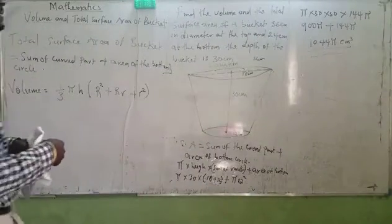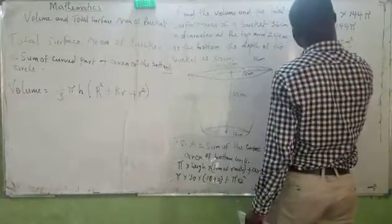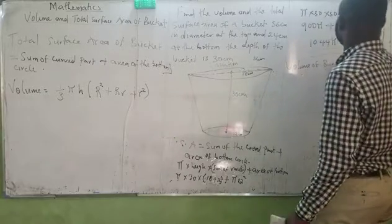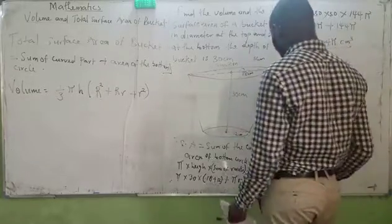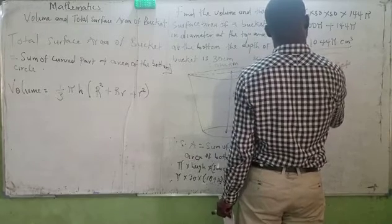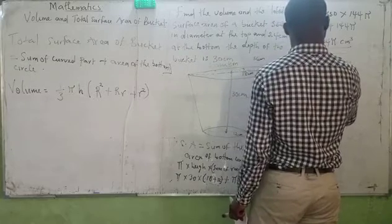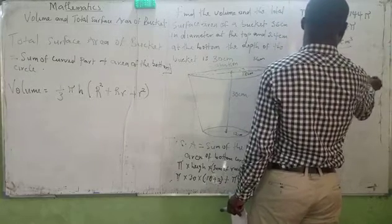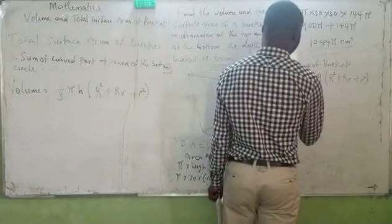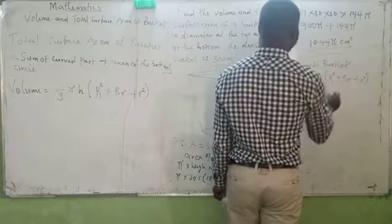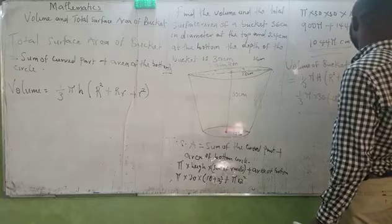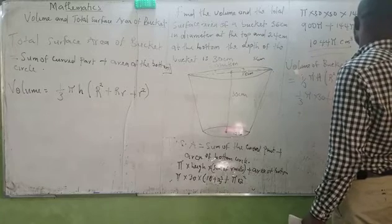For me to find the volume of this particular shape, the volume of the bucket would be equals to one third of pi h bracket of R squared plus R small r plus small r squared. It means I will be talking about one third of pi multiplied by 30 bracket of my big R squared, we have 18 squared plus 18 multiplied by 12 plus 12 squared.